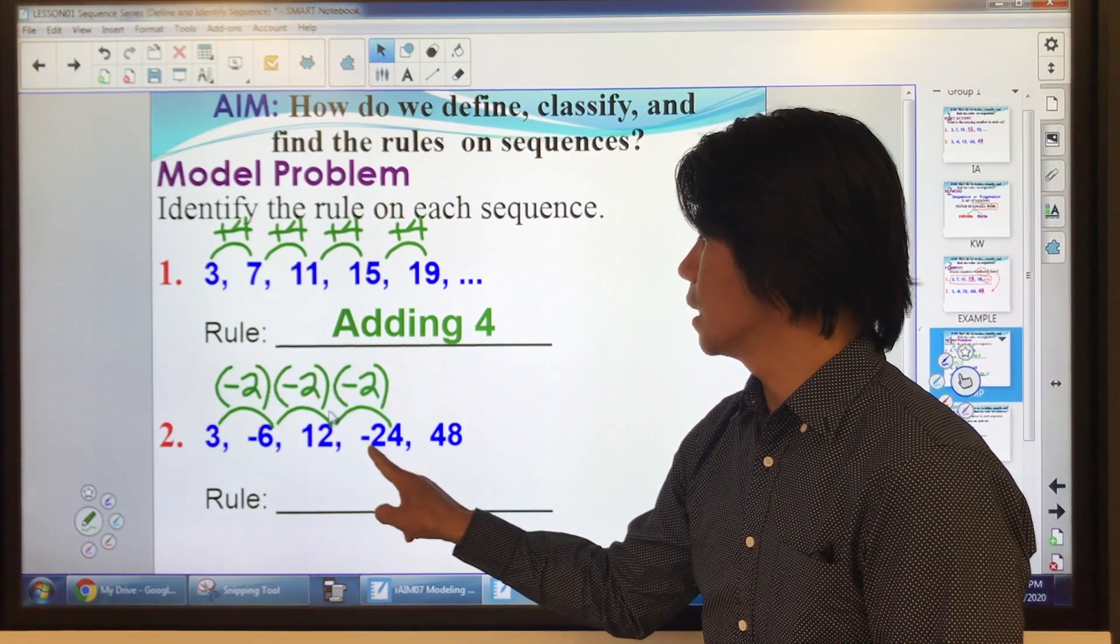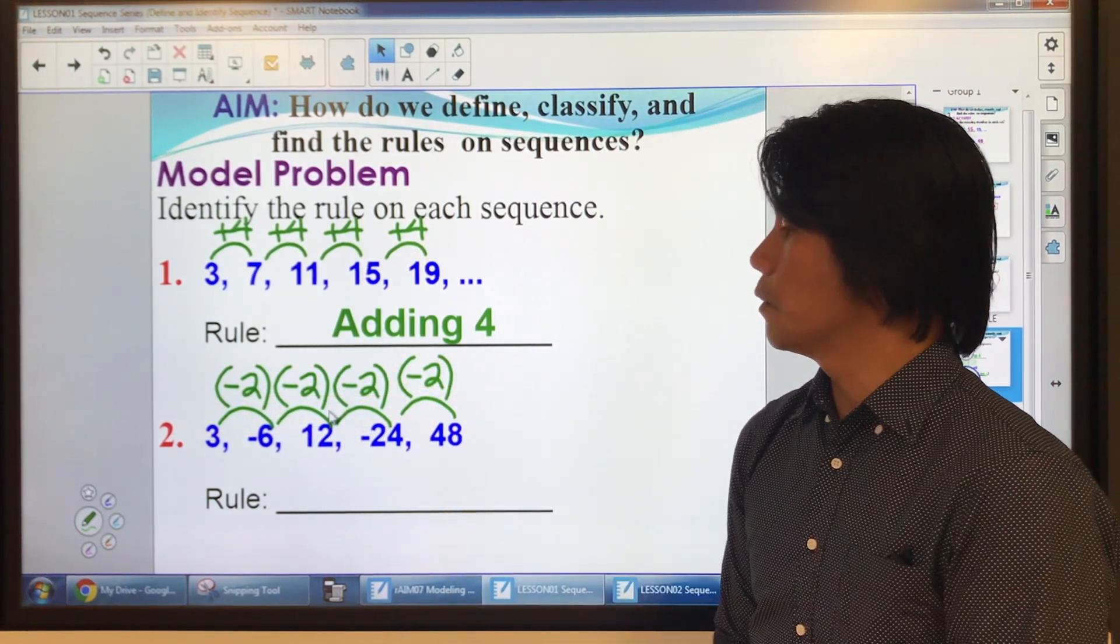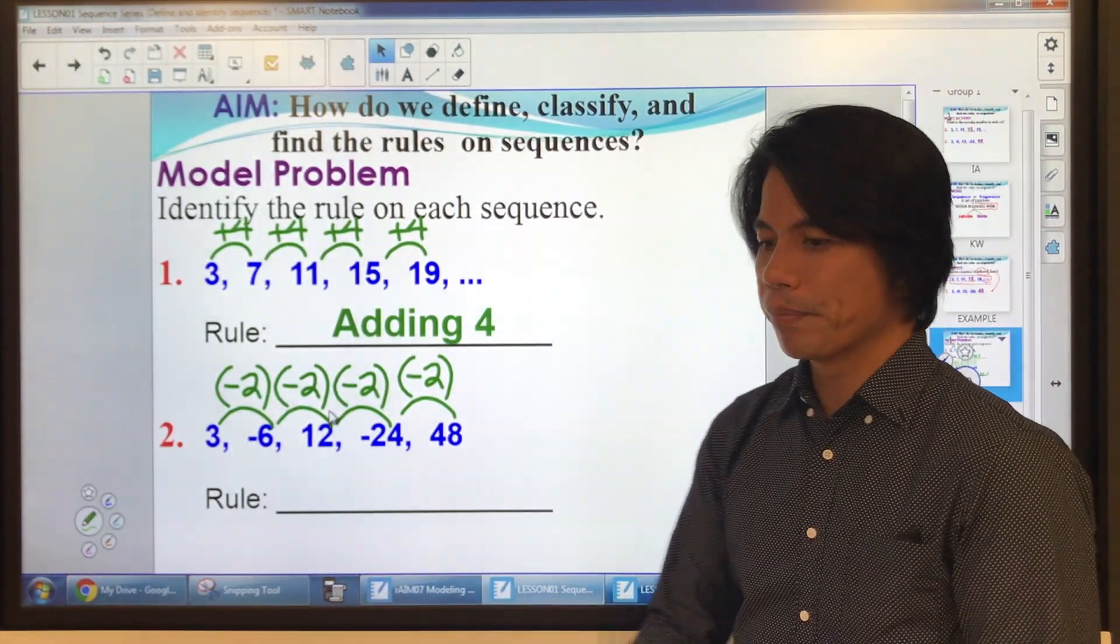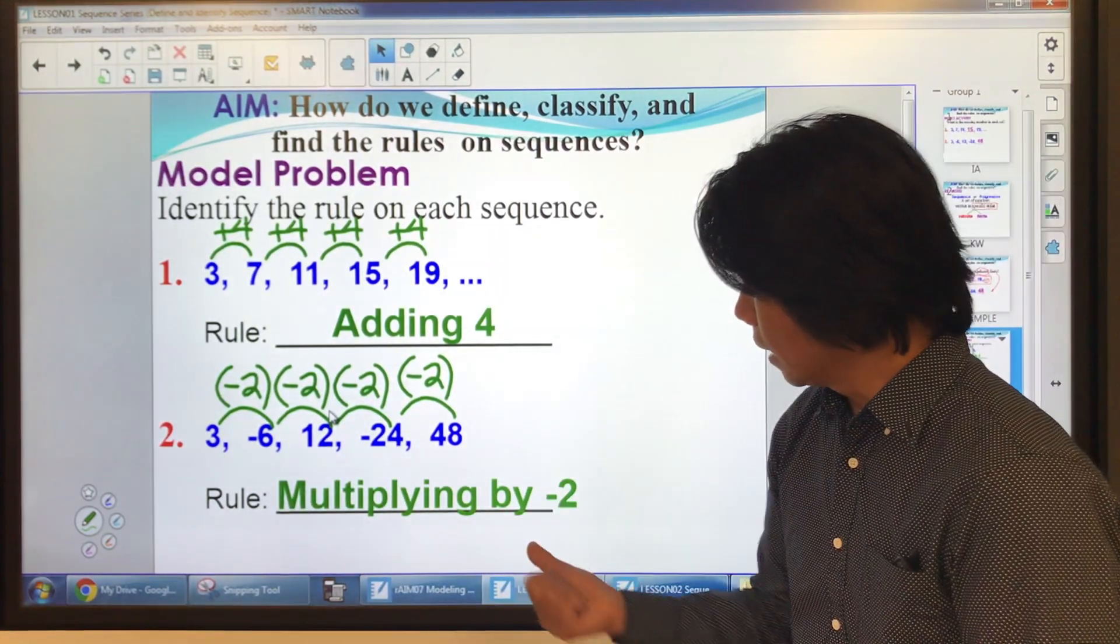Times negative two, that's negative 24. Times negative two, that's 48. So what is the specific order? What's the rule or what's the pattern? We're multiplying by negative two.